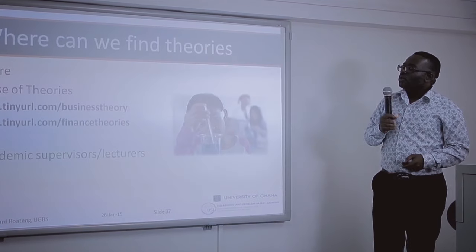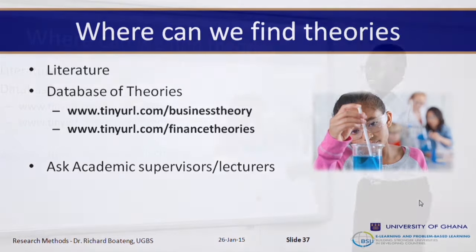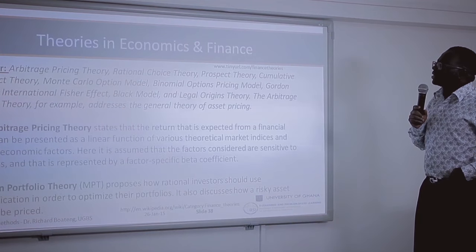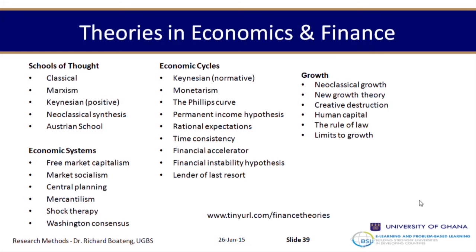Where can we find theories? There are different databases of theories, including www.tinyurl.com/businesstheories or /financetheories, and your supervisor can point you in the right direction. In economics and finance, examples include arbitrage pricing theory, rational choice theory, prospect theory, and modern portfolio theory — which proposes how rational investors should use diversification to optimize portfolios and how risky assets should be appraised. There are also broader schools of thought on economic systems: classical, Marxism, Keynesian, new classical, and the Austrian school.